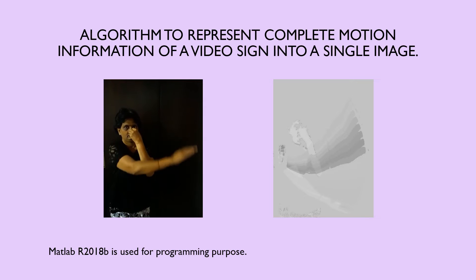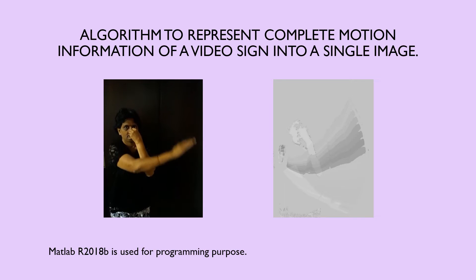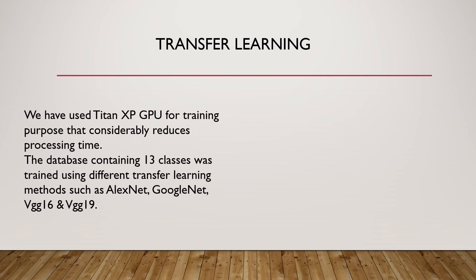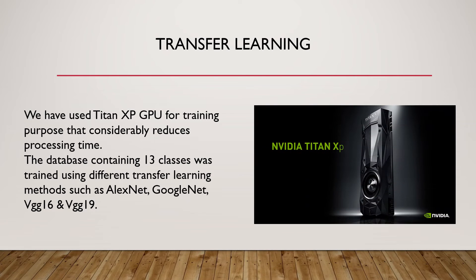The entire motion in the video is tracked and converted into a single image. Transfer learning is commonly used in deep learning applications — you can take a pre-trained network and use it as a starting point to learn a new task.